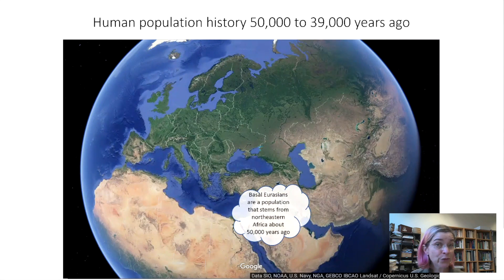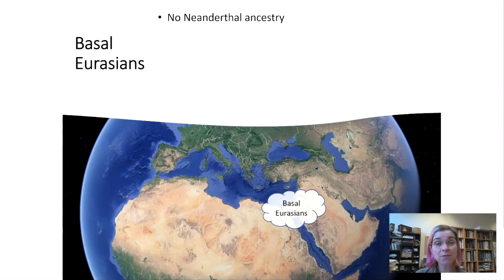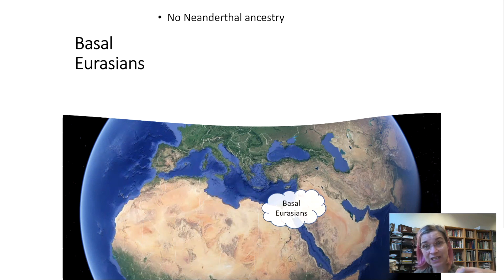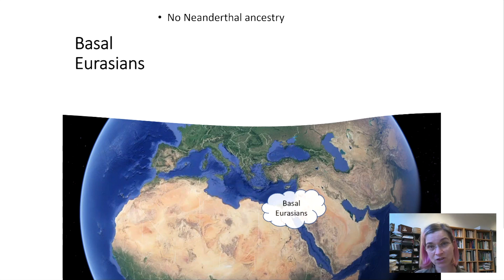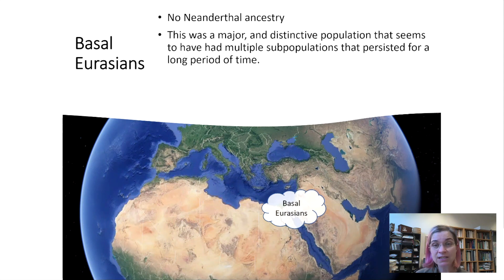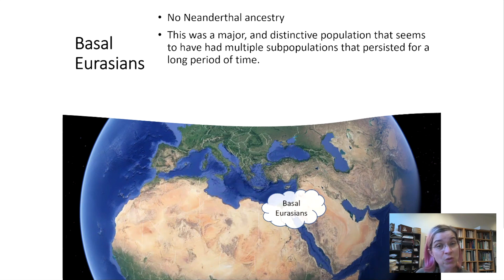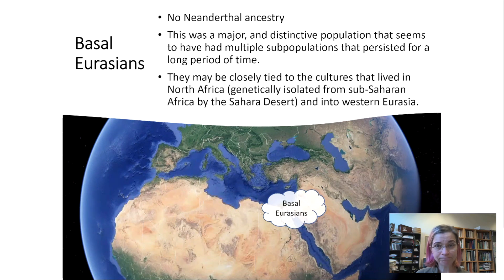What we know about the Basal Eurasians from those 51 ancient genomes is that they had no Neanderthal ancestry. Remember that there was genetic affinity between Neanderthals and people living across Eurasia in the modern genomes, but looking back in time, the Basal Eurasians had no admixture with Neanderthals or shared genetic affinities from any recent common ancestry. The Basal Eurasians were a major and distinctive population with multiple subpopulations that persisted for a long period of time — a stable population center between about 50,000 and 39,000 years ago.